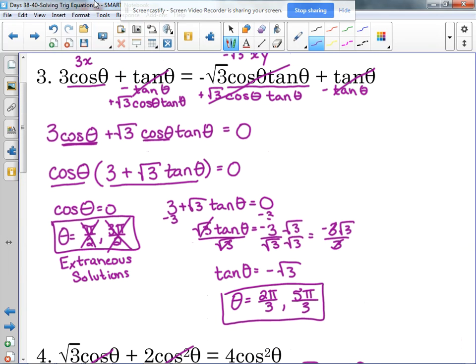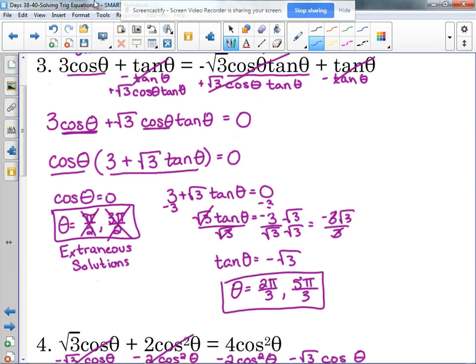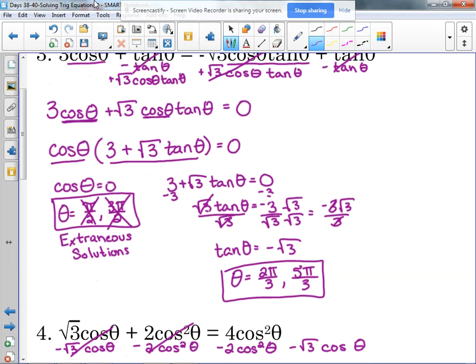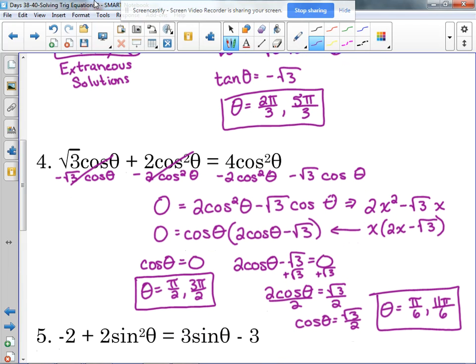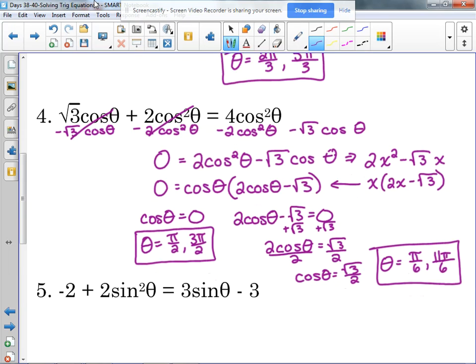Example number three, we had two different trig functions completely, cosine and tangent. We still moved everything to one side, it was equal to zero, we pulled out what they had in common. Number four, we had the same trig function but it had different exponents. Still, same thing. We got it equal to zero, we pulled out a GCF.